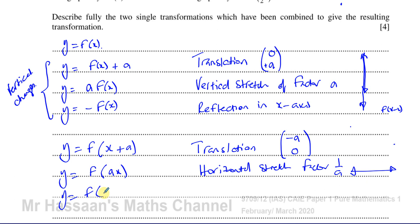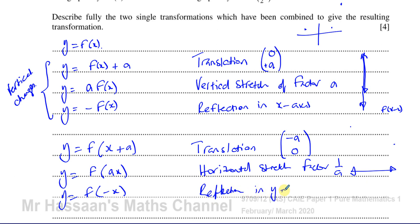If you have y equals f of minus x, this again causes a horizontal change. The x coordinates are multiplied by minus 1 — the reciprocal of minus 1 is minus 1 — so the x coordinates change their signs and the y coordinates remain the same. So a point's x coordinate changes sign while the y coordinate stays the same: it's like a reflection in the y-axis, causing a horizontal change. So this is a reflection in the y-axis.